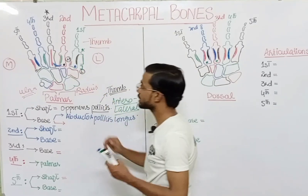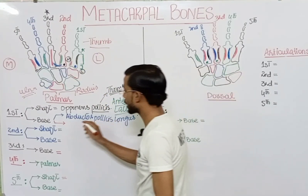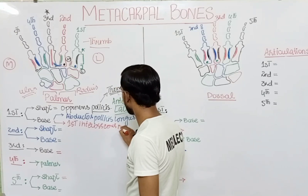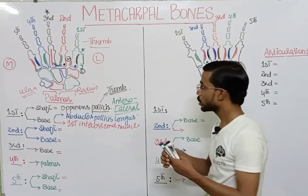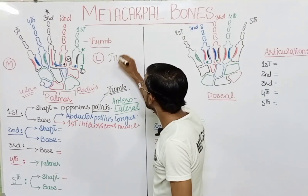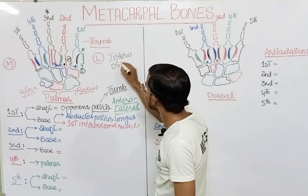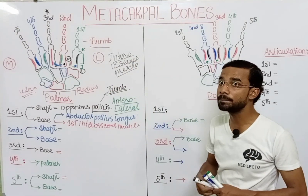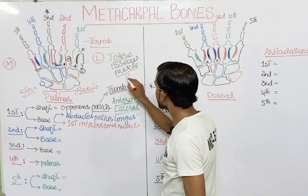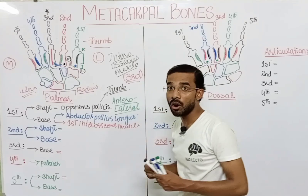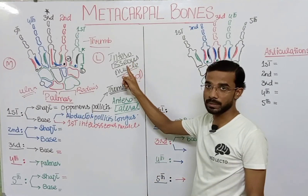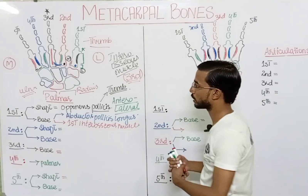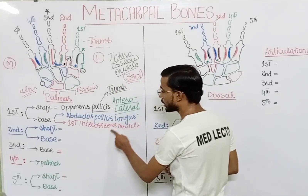At the medial side of the base of the first metacarpal, you will see the attachment of the first interosseous muscle. Keep in mind that all metacarpals have an interosseous muscle except the third metacarpal — that is an important exception. Otherwise, all metacarpals have interosseous muscle at the palmar aspect.